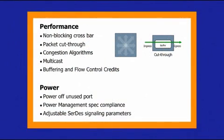PCI Express switches are architected and designed with features to improve performance and lower power. Some examples of performance enhancing features include non-blocking crossbar fabric, packet cut-through capabilities, congestion algorithms, port arbitration, multicast, the size of the port buffering and flow control credits, and more. Power saving features may include the ability to power off unused ports and lanes, support for the latest power management specifications, and the ability to fine-tune SERDES capabilities.